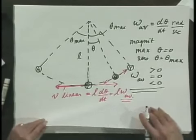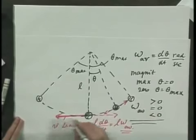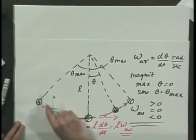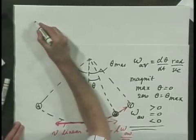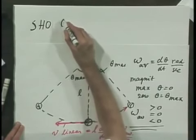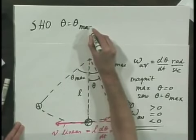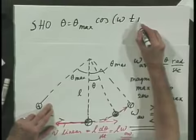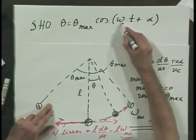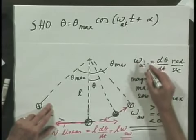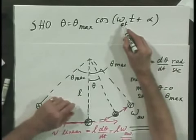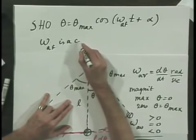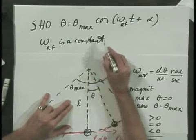Now let us think about simple harmonic oscillation, which is to a good approximation the motion of this pendulum in terms of theta. Theta equals theta_max times the cosine — or you may prefer the sine — of (omega·t + alpha), where alpha is some phase angle. This omega has nothing to do with the angular velocity omega. This is the angular frequency, and it is a constant in time — it never changes, unlike the angular velocity which does change.